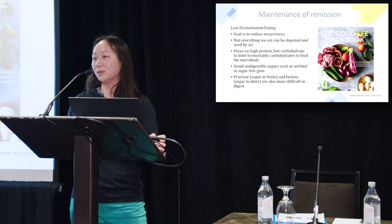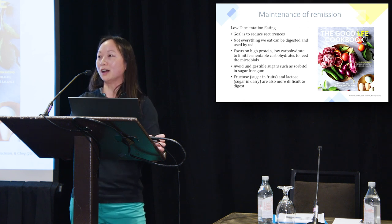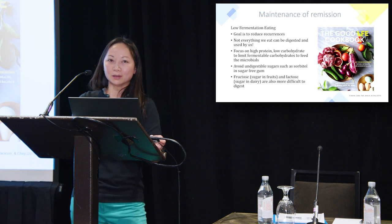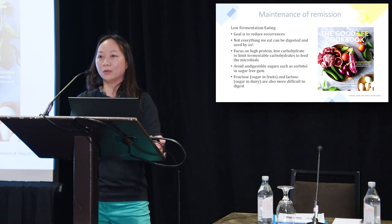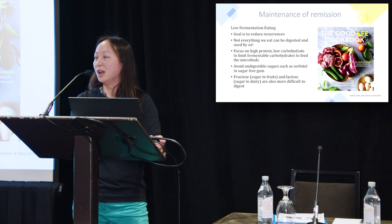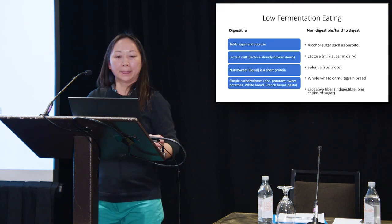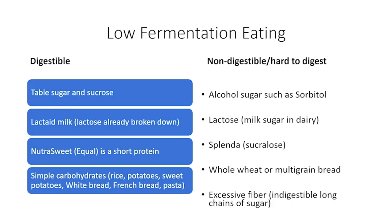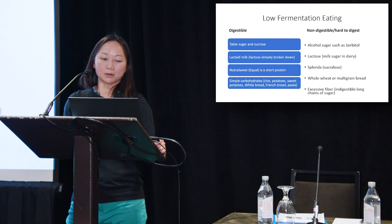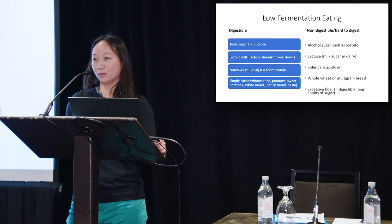A common pitfall: some patients come in claiming 100% dietary compliance but still have symptoms and bloating. When asked, one patient loved to drink green apple green tea — which contains artificial sugars that we cannot digest and that feed microbials. Digestible foods include table sugar and simple carbohydrates, highlighted as easier for our body to digest. The opposite column includes foods to avoid. Simple carbohydrates like white potatoes, sweet potato, white bread, and French bread are better options. Try to stay away from dairy as much as possible because it contains lactose, which can be difficult to digest.